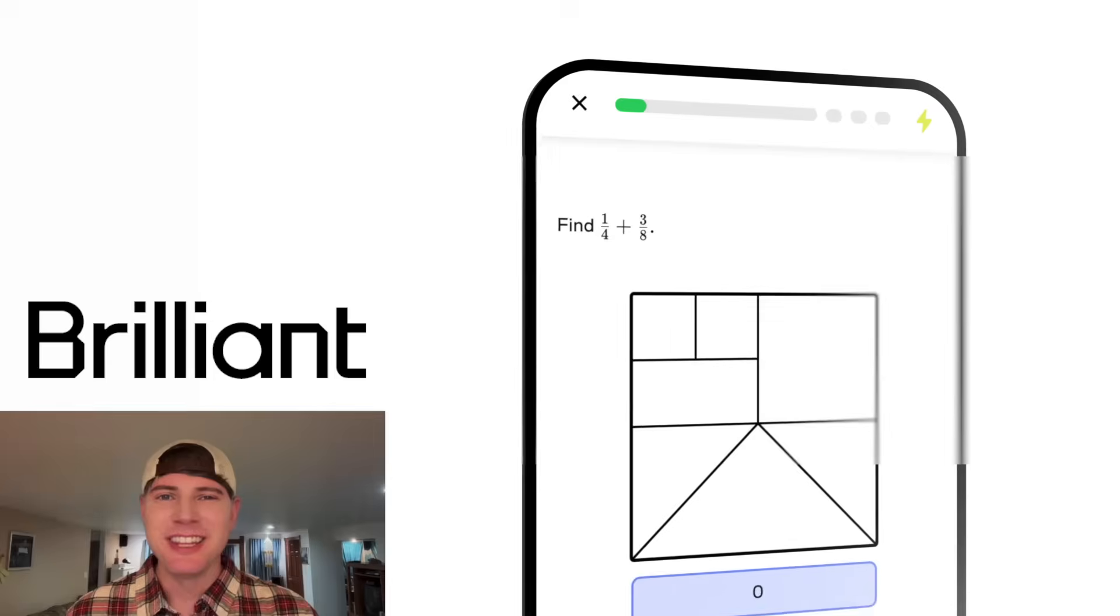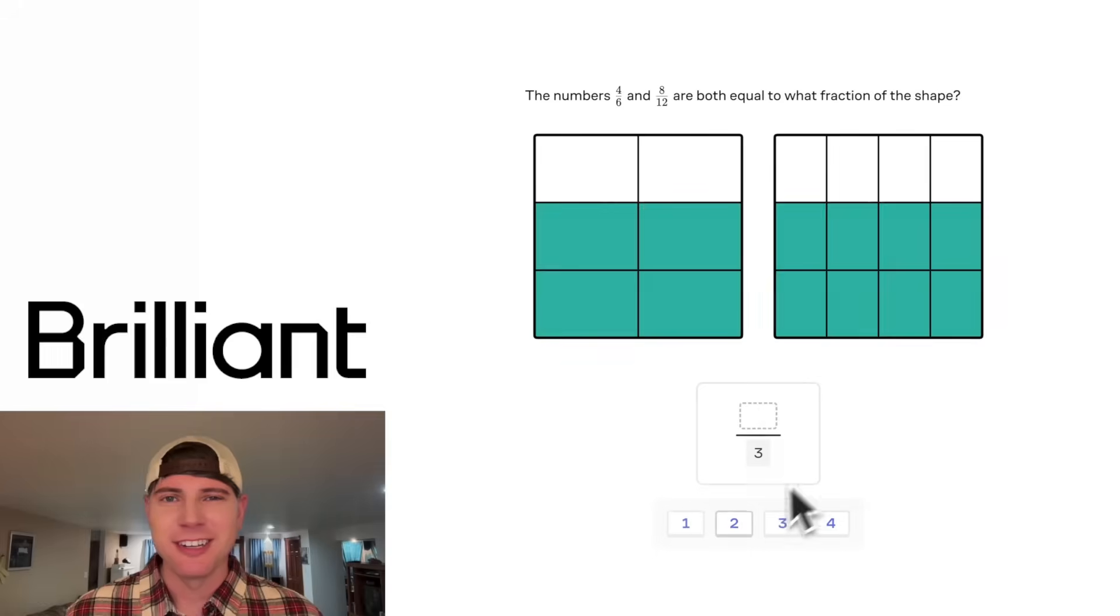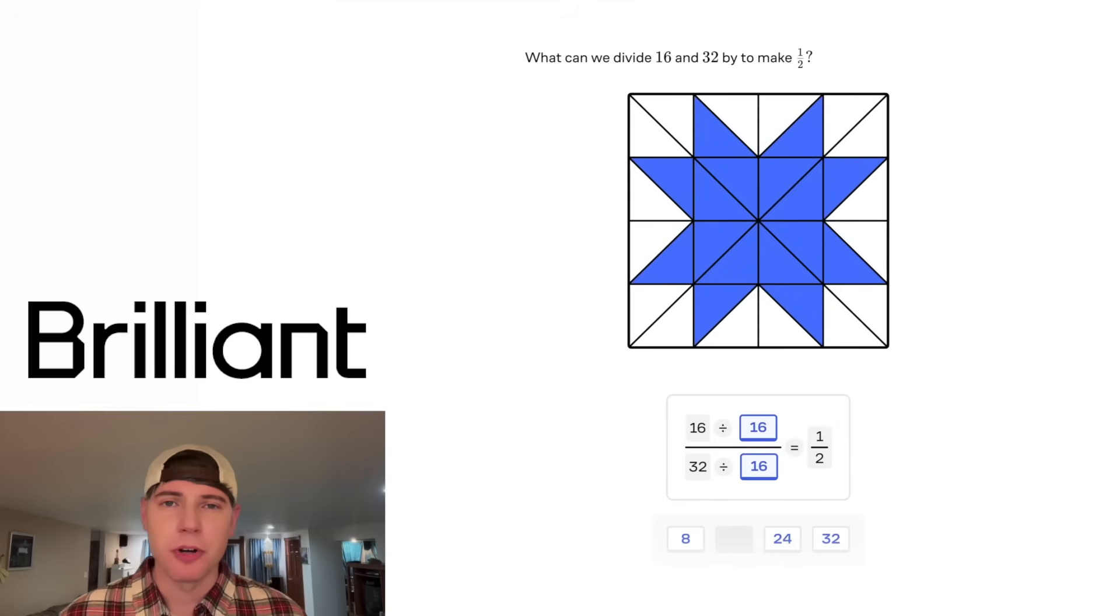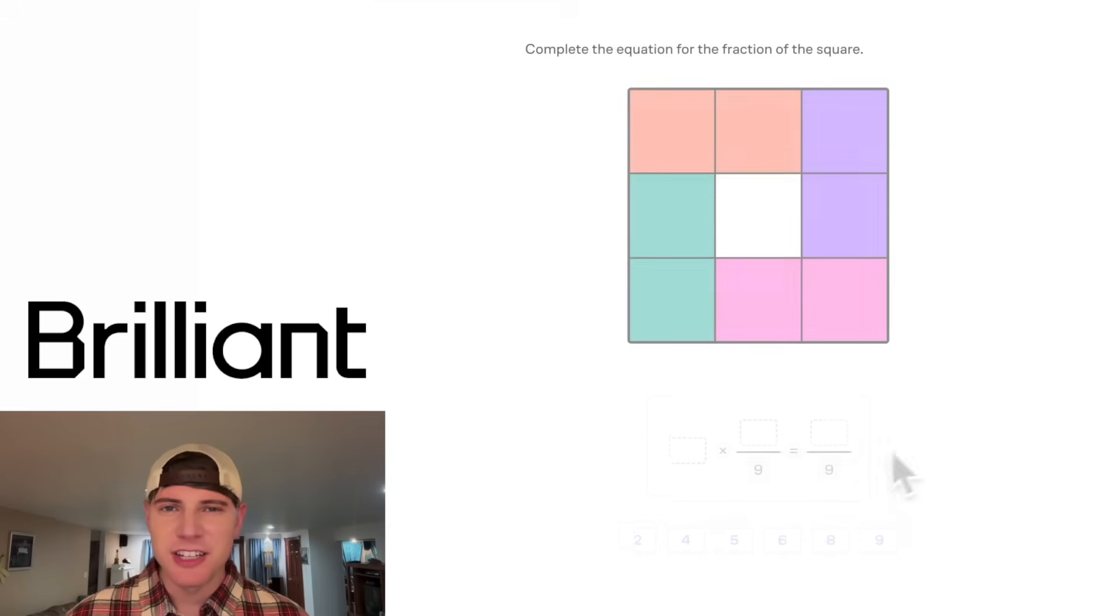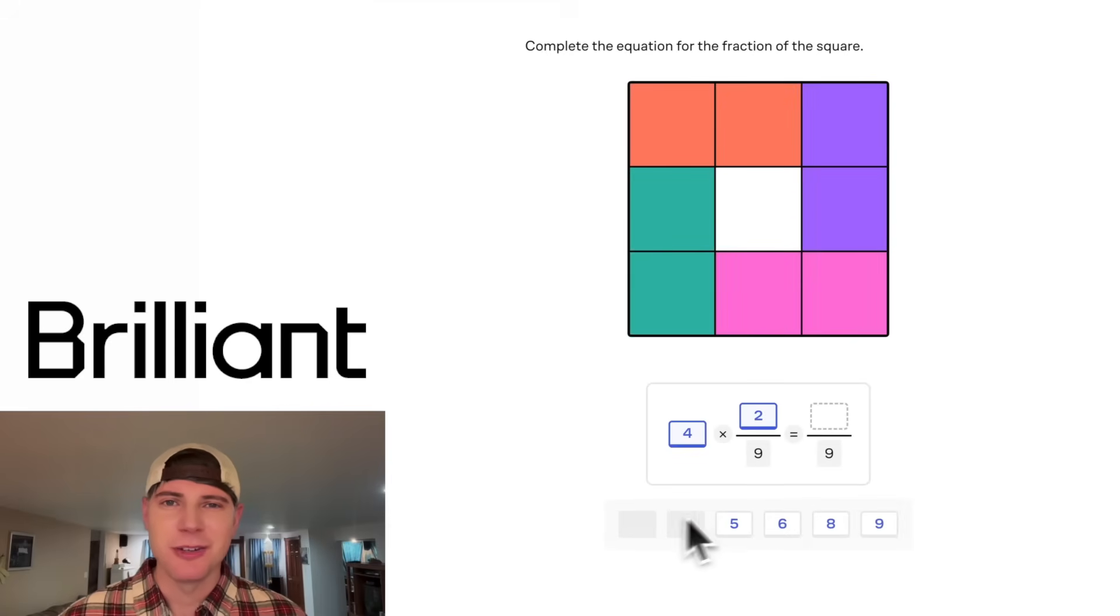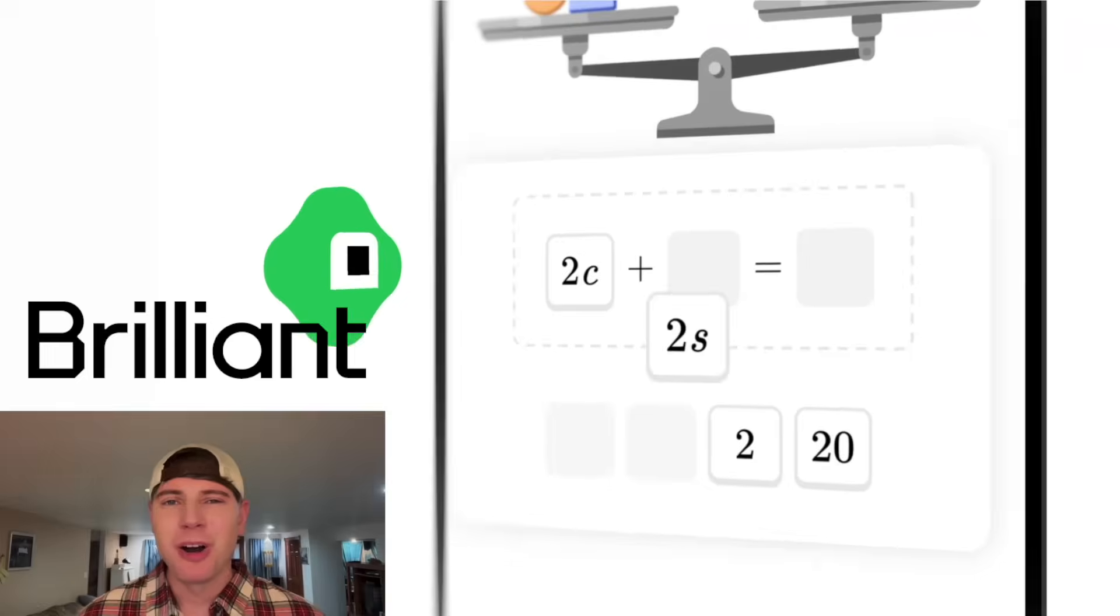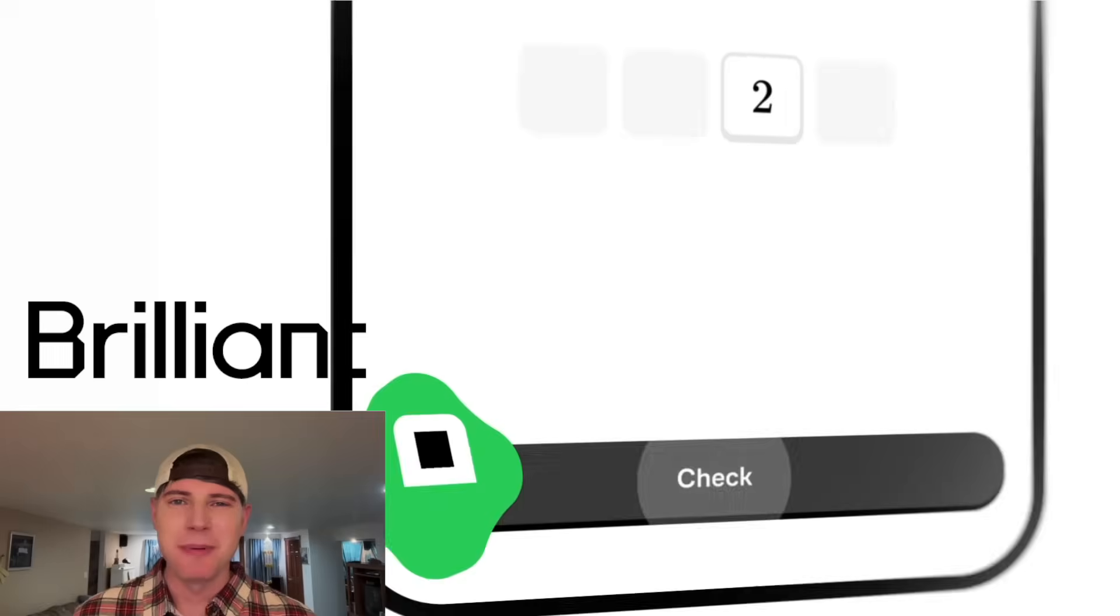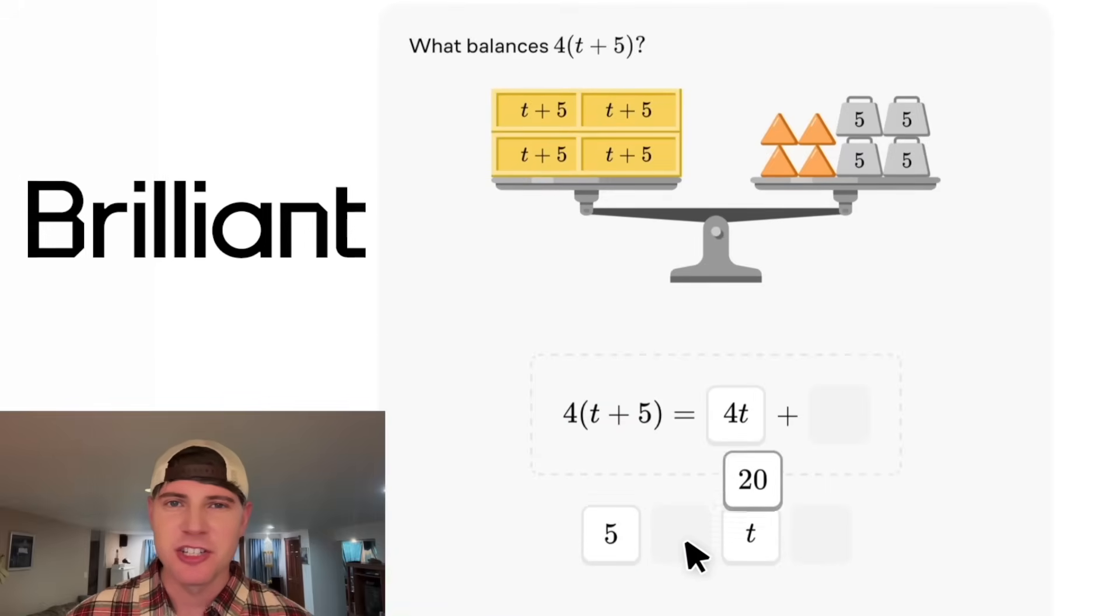If you like solving puzzles like the one we did in this video, Brilliant has you covered. It's basically the perfect training ground. They have thousands of lessons across math, data analysis, sciences, programming, and AI. And everything is hands-on and interactive. It's the most effective way to learn. You really understand the concepts instead of just memorizing some notes. One thing I really love about Brilliant is you never get stuck wondering what should I do next. Brilliant walks you through each concept one step at a time. And if you ever need a gentle nudge, the hints and explanations are just a click away.